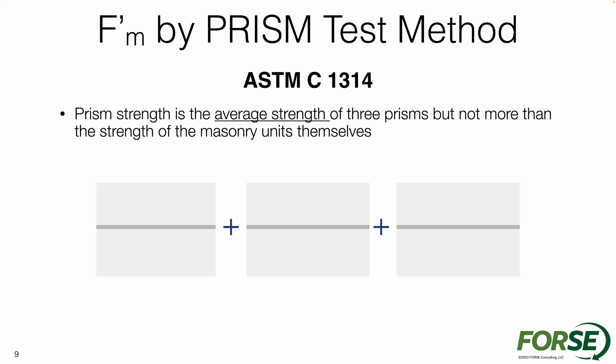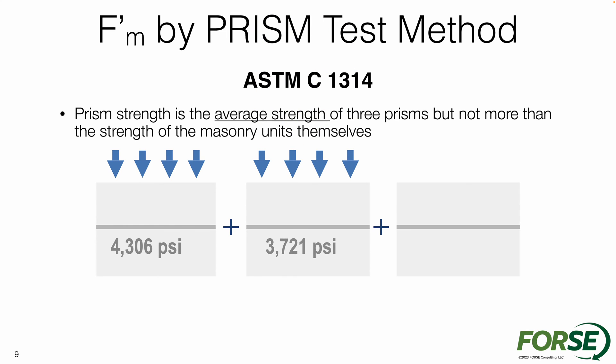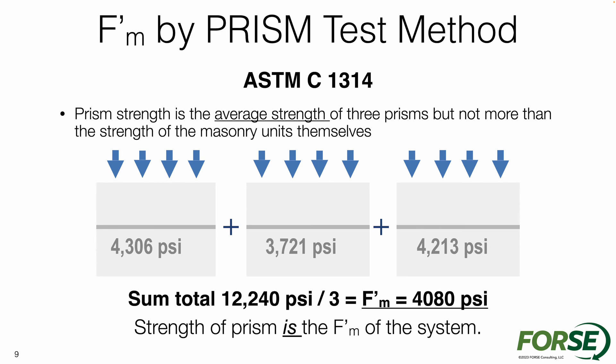If I have three different samples, I'm going to test each one of those and determine an overall strength for each different test. Once I have all of that information, I can sum them up and divide by three to get the average, giving me an F'M of just over 4,000 PSI. The strength of the prism test is going to be the F'M of the masonry assembly.